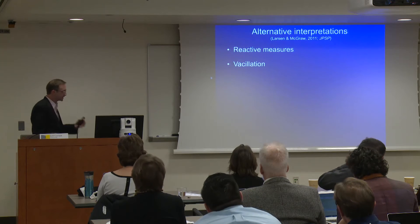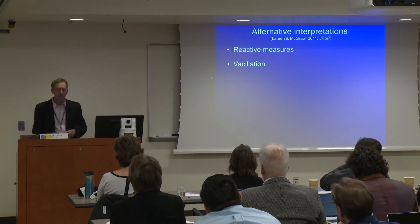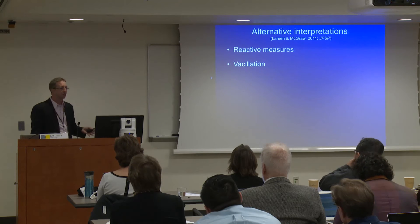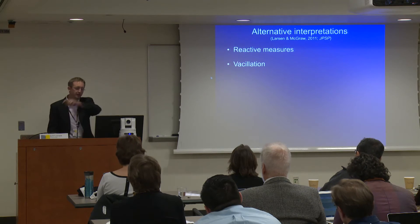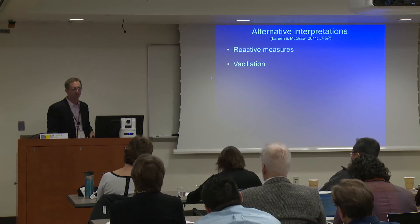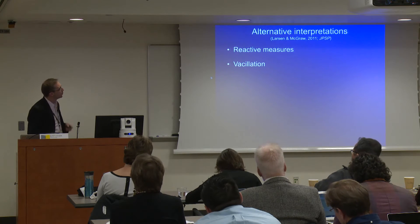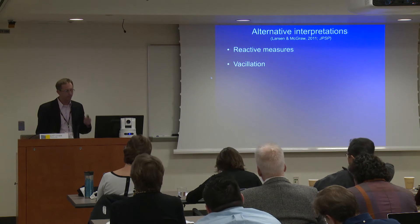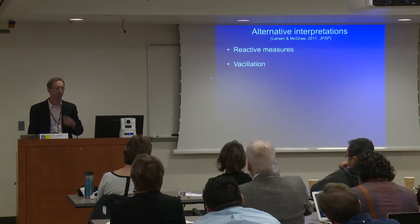Studies like this address concerns that our measures were reactive. Phoebe mentioned vacillation — a circumplex model or Watson-Tellegen model can easily accommodate people moving back and forth between happiness and sadness. Emotions change. So what we need to do to figure out whether people are feeling happy and sad at the same time is get measures with greater temporal resolution.